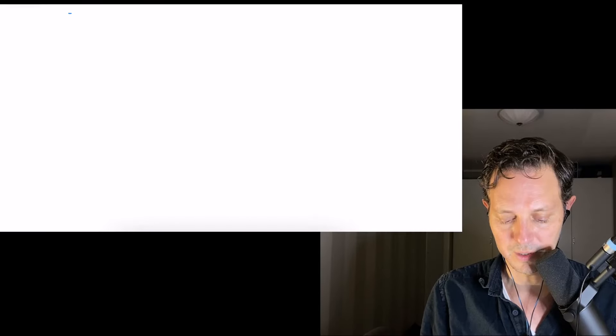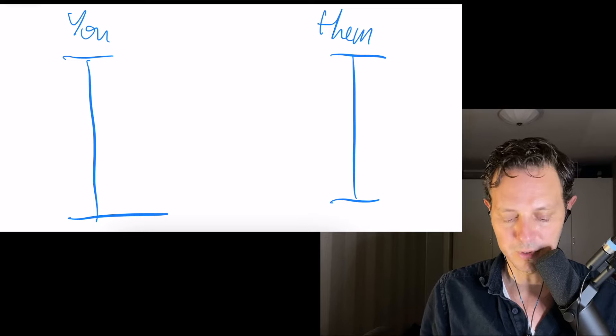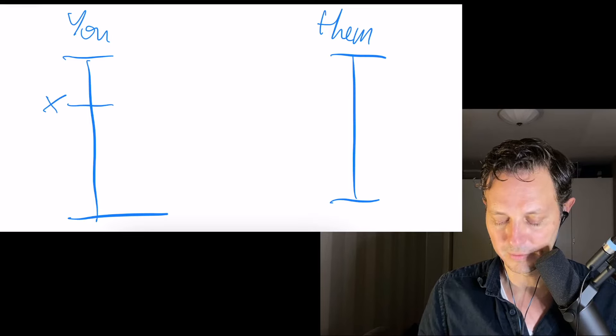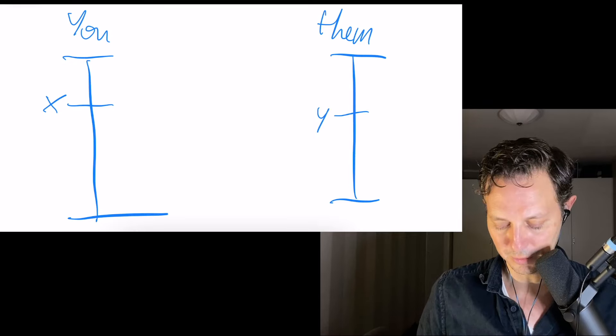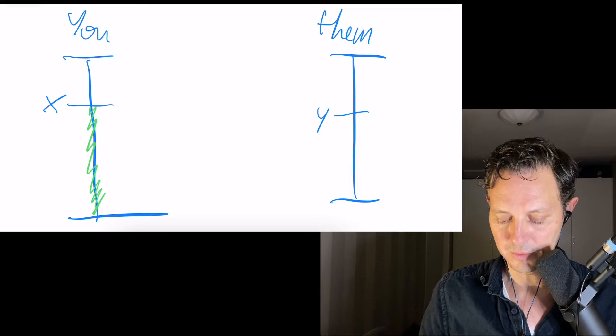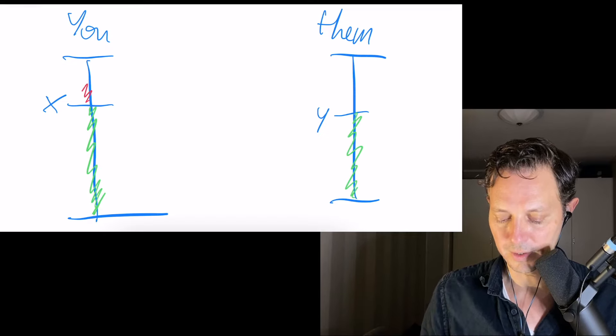So let's do a simple graph. On the one hand, we have you and we have them, and we have just how pure what we bring to the table is. Let's say we're at a level of X, and they are at a level of Y. In a healthy relationship, we know that all of the good stuff is all the green stuff between zero and X, or zero and Y, and we probably have some level of trash or some level of toxicity.